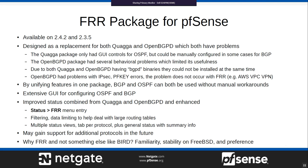A common question is why we chose FRR over something like BIRD. We were already familiar with Quagga, and FRR looked like the natural progression to something more modern. FRR has been very stable on FreeBSD, just as Quagga was. It's also a personal preference — most of our team is more comfortable with the underlying syntax, debugging, and troubleshooting in the Quagga/FRR ecosystem.